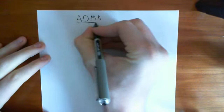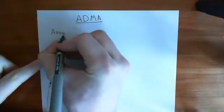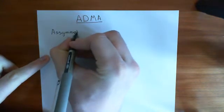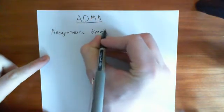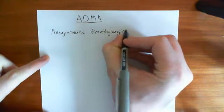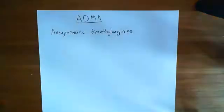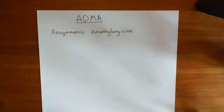I'll just write out its full name: asymmetric dimethyl arginine. This compound is an endogenous inhibitor of nitric oxide synthase enzymes, and it will inhibit all three nitric oxide synthase enzymes. Its ability to do so is about equal to that of LNMMA, or NG monomethyl L-arginine.